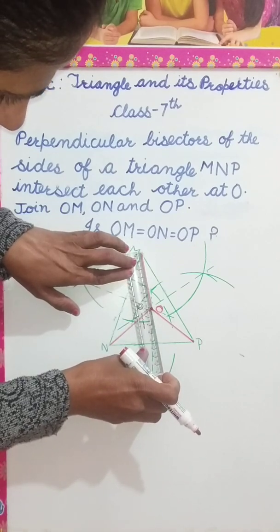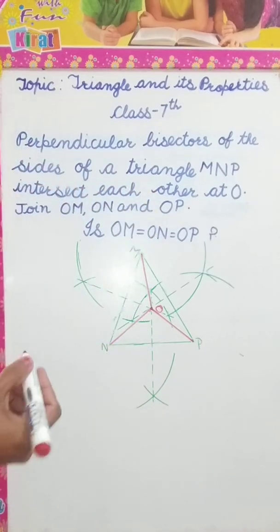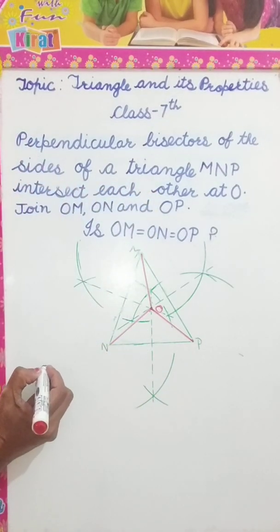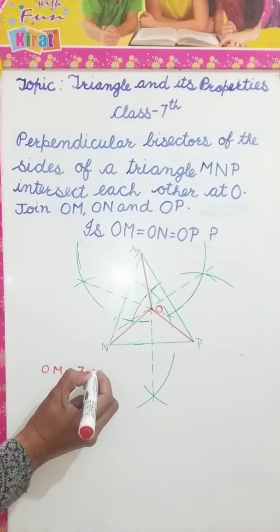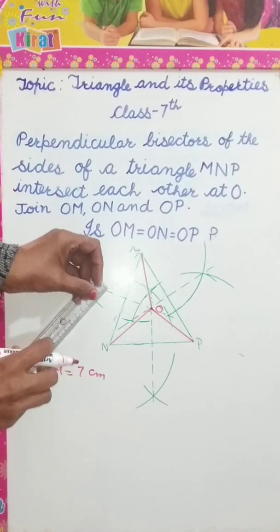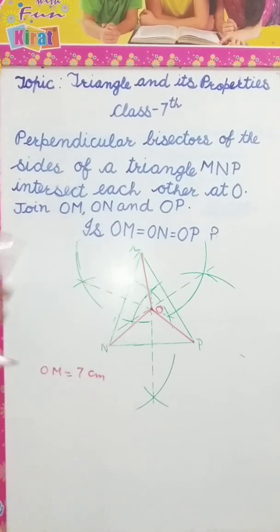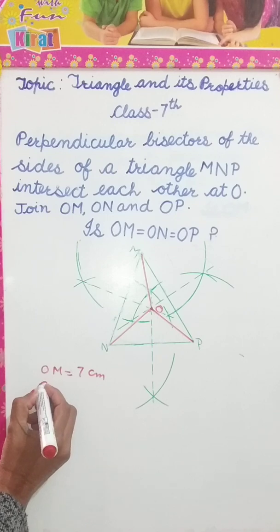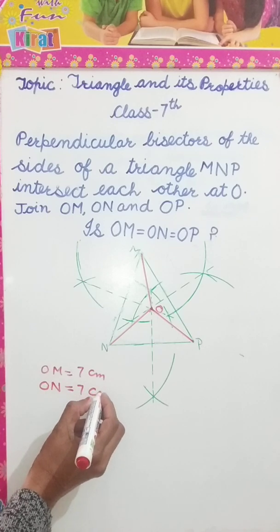It is 7 cm. OM is 7 cm, then ON, yeah, it is also 7 cm. ON is equal to 7 cm and